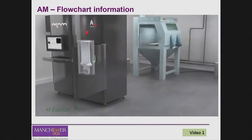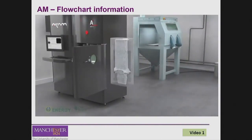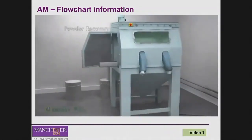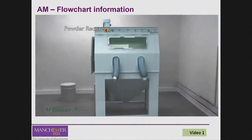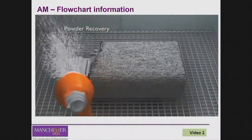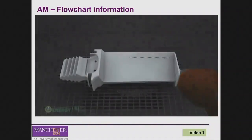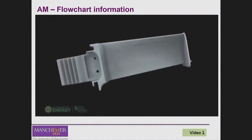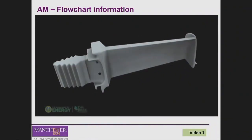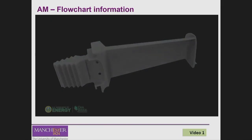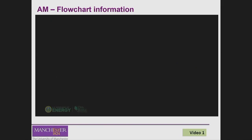An important point is that many additive manufacturing processes require a post-processing stage after the 3D printing is complete — either to remove support structures for overhanging components, or to remove material that has not been processed.